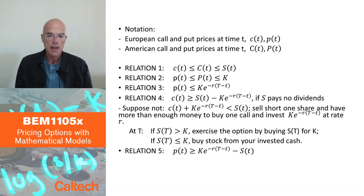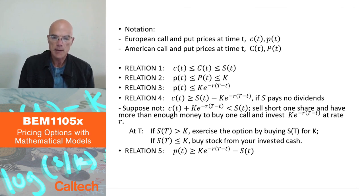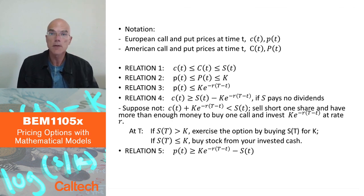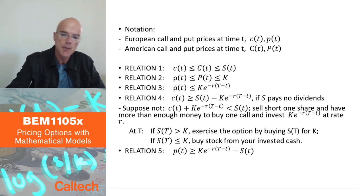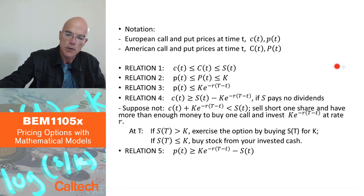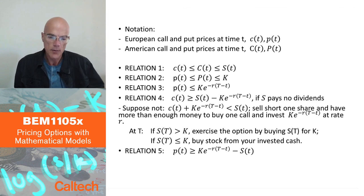Moving to the next slide — a bit of notation. I'm going to consider vanilla options: European calls and puts, with the price at time small t, where small t stands for today. For the call it's a lowercase c, and for the put it's a lowercase p. For American call and put prices it's going to be uppercase C(t) and uppercase P(t), which denotes the value of American call and American put options at time t before maturity. I have several relations here — some are going to be easier, some harder.